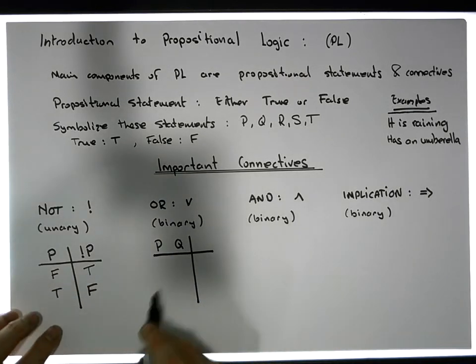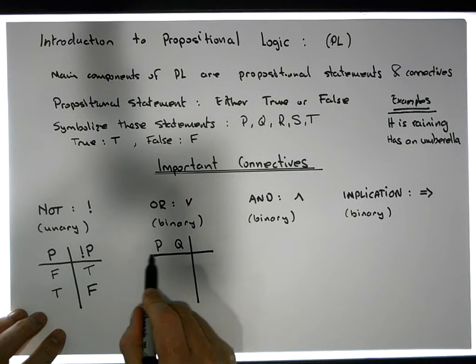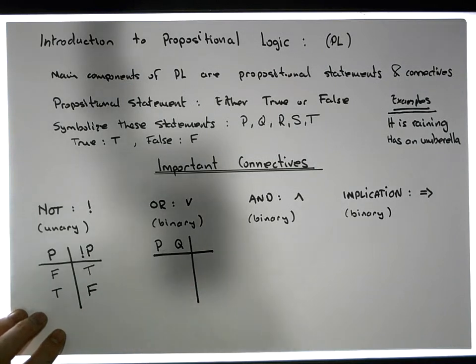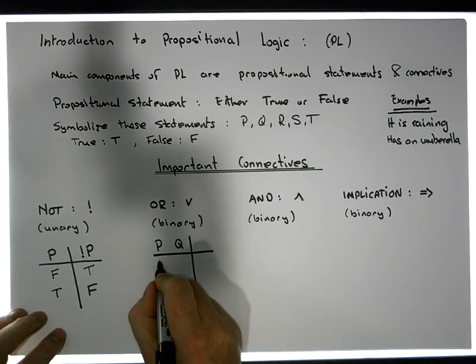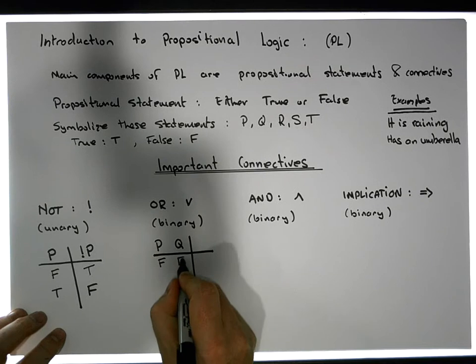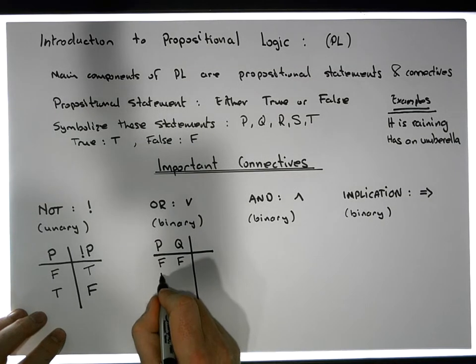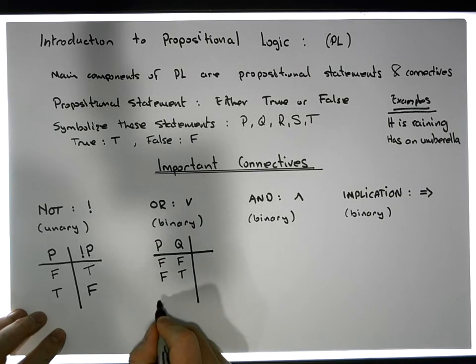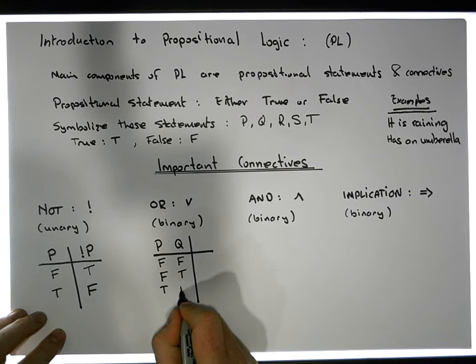What will the output look like? Well, actually, let's define all the possible states that P, along with Q, can be in simultaneously. Well, both could be initially false. The first one could be false, and the second one true. The first one could be true, and the second one false.